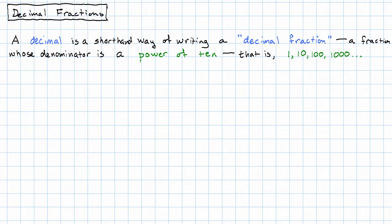So some examples of decimal fractions might be three tenths, seventeen thousandths, or 2241 hundredths.